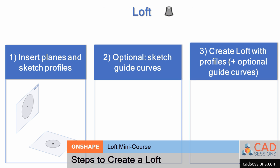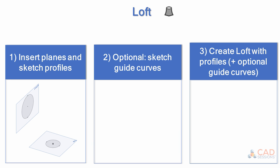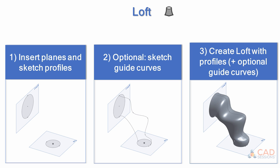To create a loft feature, the general workflow is: first, insert any planes you might need and sketch all of your profiles. Second, which is optional, sketch your guide curves — more about this in a minute. Third, create your loft using profiles and optional guide curves. Nested profiles are not allowed, meaning you can't create a loft from a profile that has another closed contour inside of it — the loft won't generate. Just keep this in mind when creating your profile sketches for your lofts.